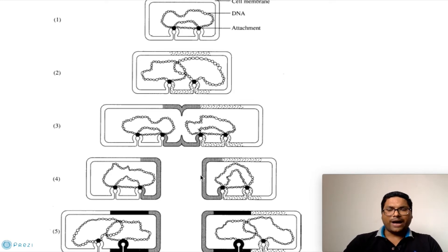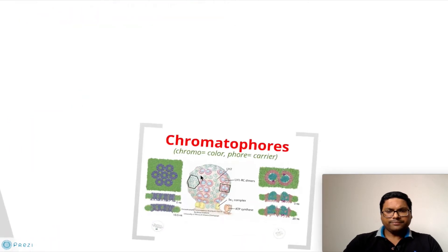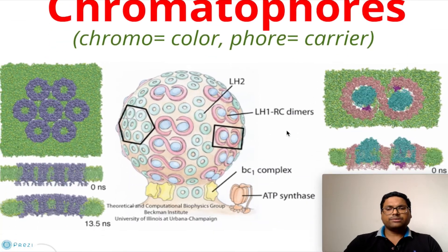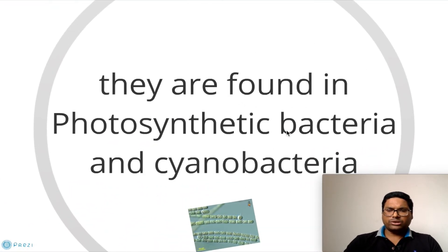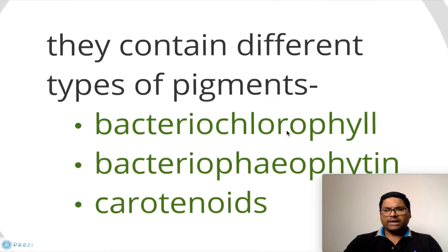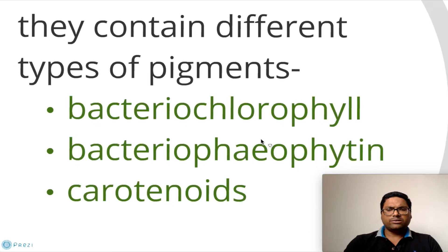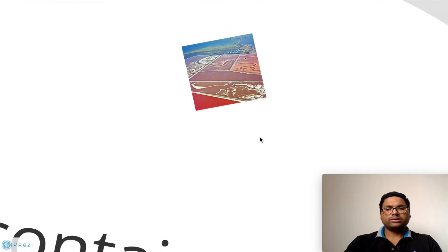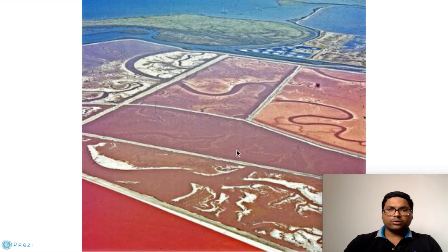The next structure is chromatophores, which are color bodies found in photosynthetic bacteria as well as cyanobacteria. They contain different types of pigments, including bacteriochlorophyll, bacteriopheophytine, and some carotenoids. You can see bacterial growth inside ocean water which, due to these chromatophores, causes the water itself to turn a particular color.